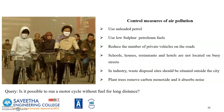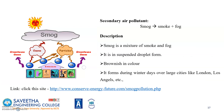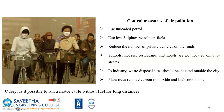The control measures include use of unleaded petrol and low-sulphur petrol. Reducing the number of private vehicles on roads, near schools, restaurants, and hotels on busy streets also helps. Planting trees helps absorb pollutants and reduce noise.